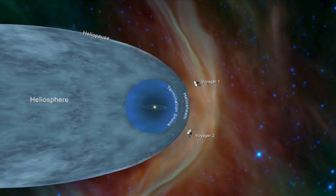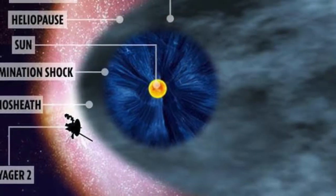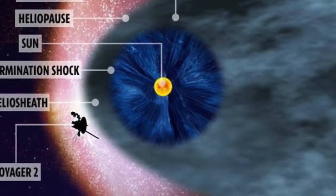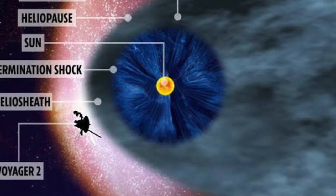This place is called the heliopause. It marks the end of the region created by our Sun, and that is called the heliosphere.